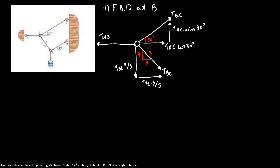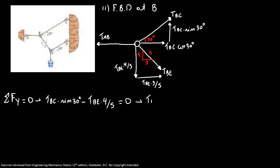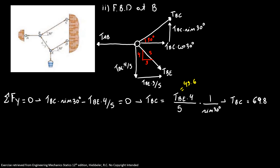Using our equations, the sum of forces in the y-direction equals 0. So, tension BC times sine of 30 minus tension BE times 4 over 5 equals 0. Therefore, tension BC equals tension BE times 4 over 5 divided by sine of 30. Using tension BE equal to 43.6 pounds, tension BC is equal to 69.8 pounds.